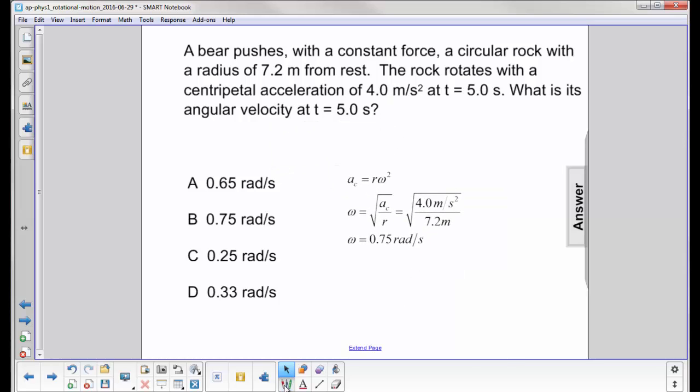Here's the equation we'll be using. Centripetal acceleration is v squared over r, but it's also r omega squared when you make the substitution v equals r omega.